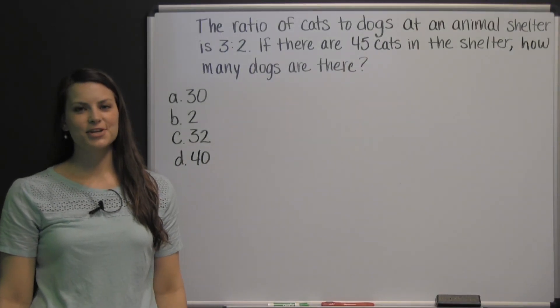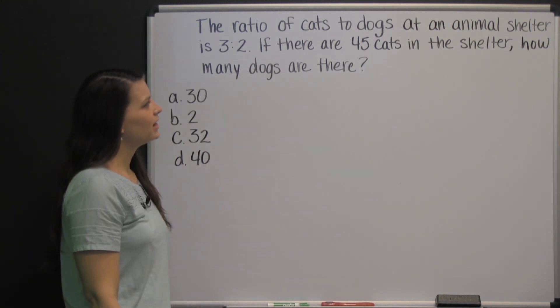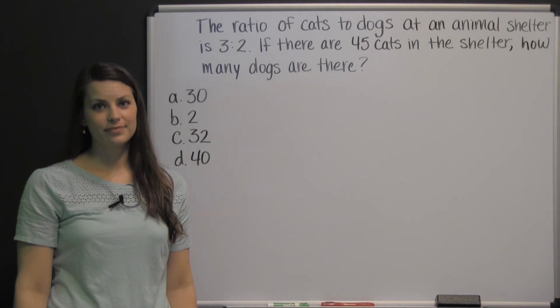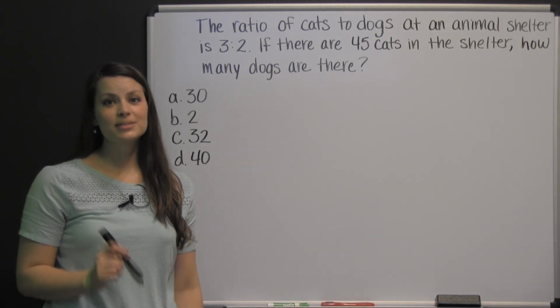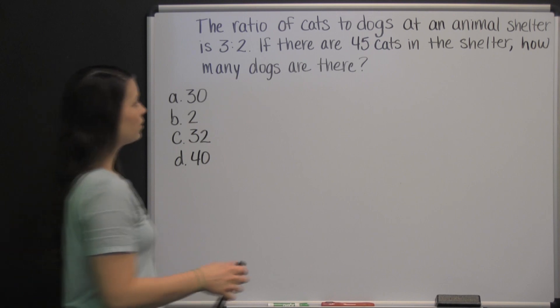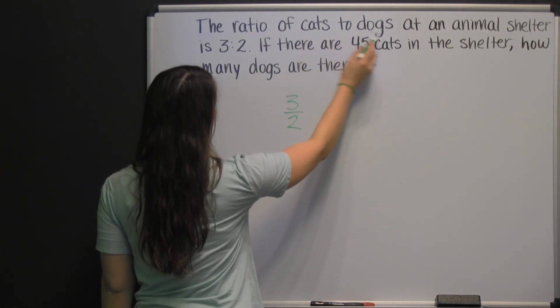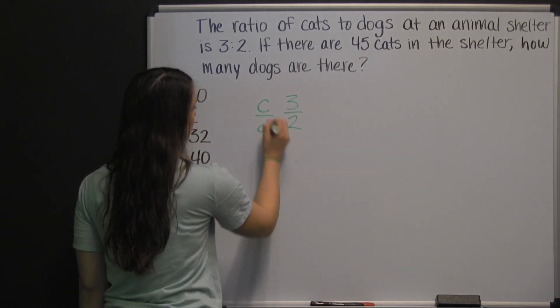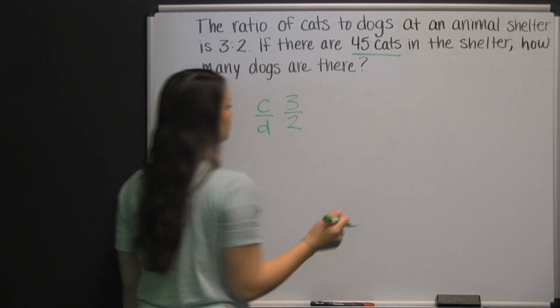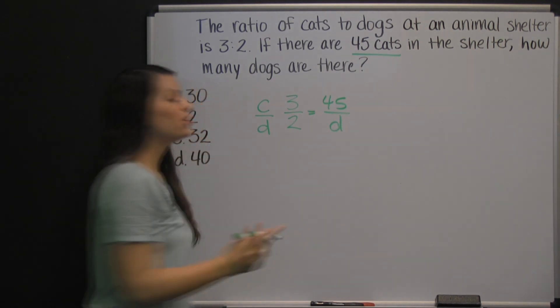This is a question from the HSPT mathematics section of a practice test. The ratio of cats to dogs at an animal shelter is 3 to 2. If there are 45 cats in the shelter, how many dogs are there? It's important to keep in mind that on the HSPT exam, you won't be able to use a calculator, so we're going to work this question without one. Starting with our ratio 3 to 2, that ratio is the number of cats to dogs. Then, we were told that there are actually 45 cats at the shelter. Now what we have is a proportion, and what we don't know is our number of dogs.